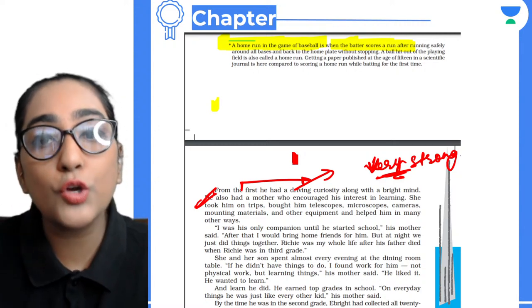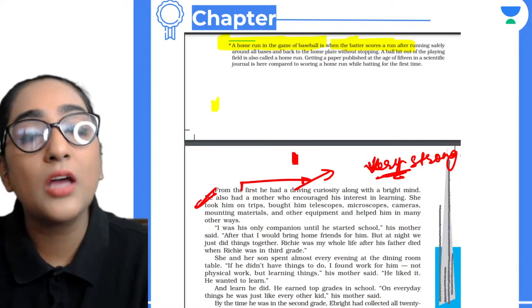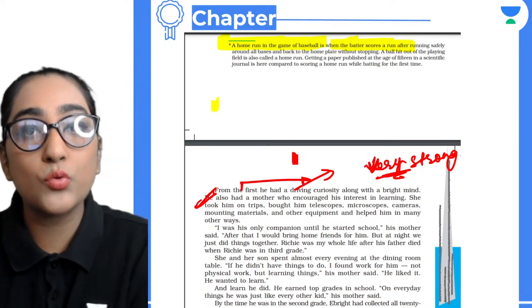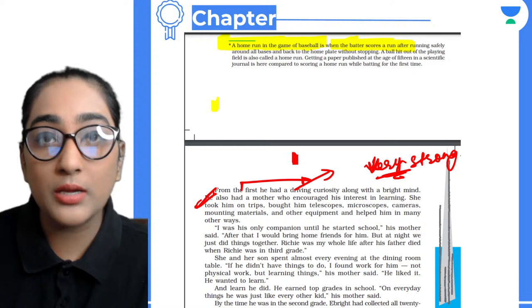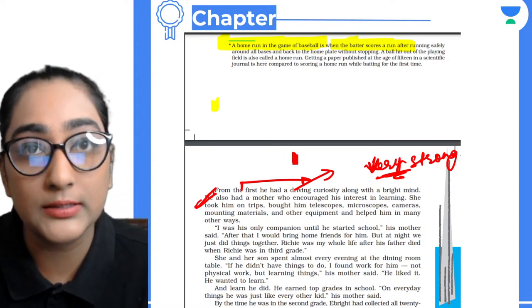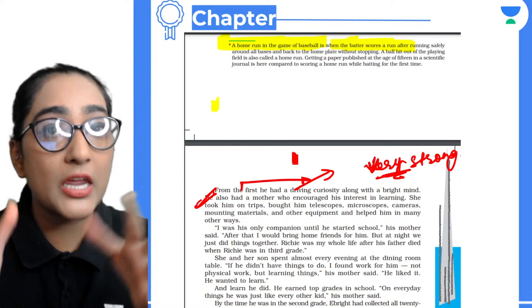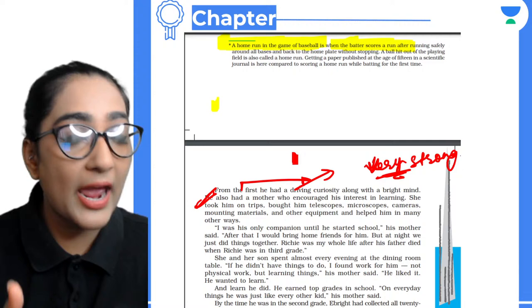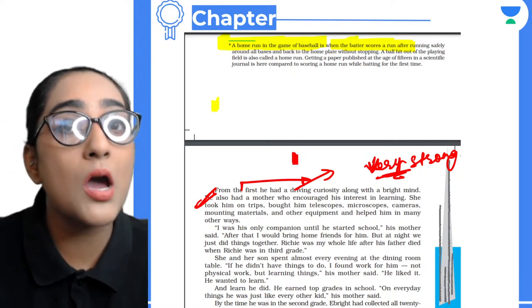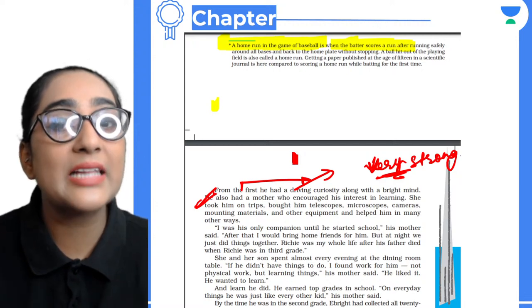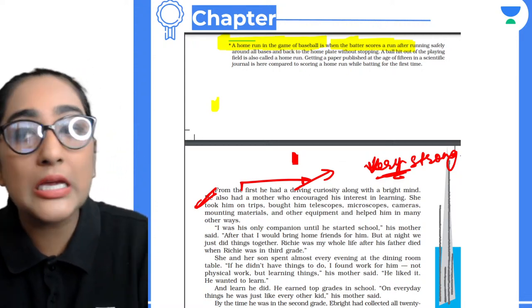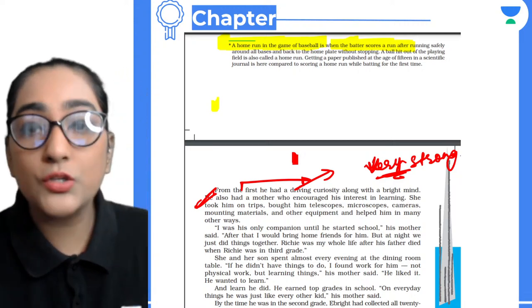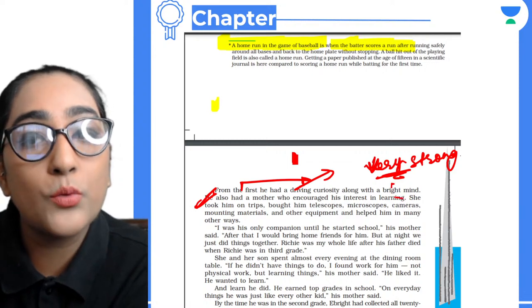He also had a mother who encouraged him about his interest in learning. His mother was the driving force. She was a very important person in his life to help him become what he became. She had a very important role in his life to make him a scientist because she was always happily helping him to be a curious student.